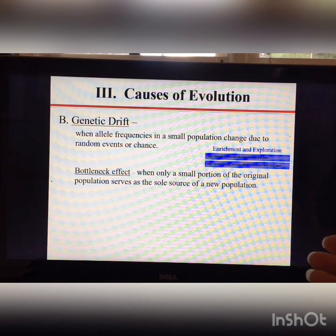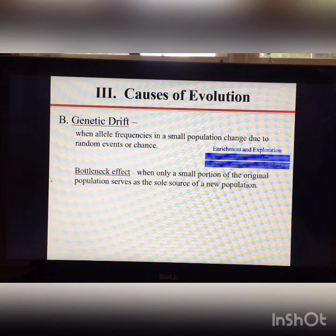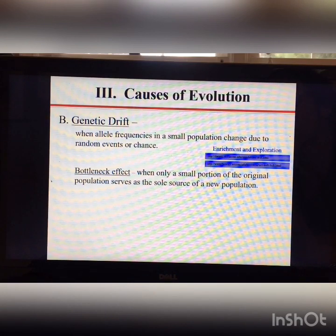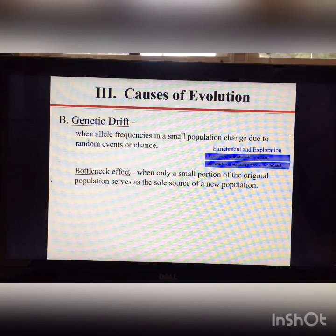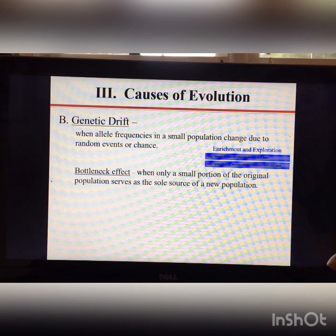One subcategory of genetic drift is the bottleneck effect — when only a small portion of the original population survives to become the sole source of the new population. This can happen due to overhunting, where many individuals are killed off and only a few are left to reproduce.